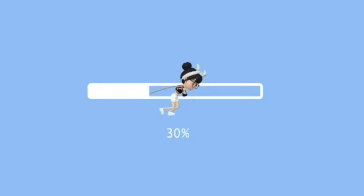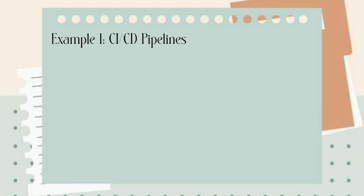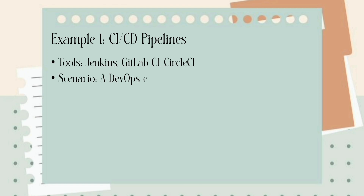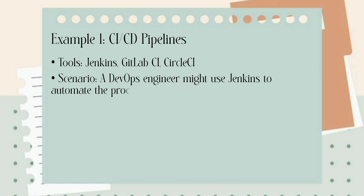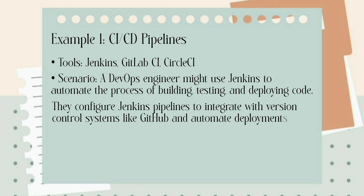Now I'm going to give some examples to illustrate how DevOps and SRE engineers use and create tools differently. For CI/CD pipelines, we use tools like Jenkins, GitLab CI and CircleCI. A DevOps engineer might use Jenkins to automate the process of building, testing and deploying code. They configure a Jenkins pipeline to integrate with version control systems like GitHub and automate deployments to staging or production environments.